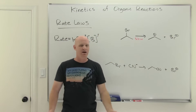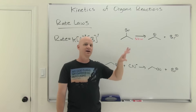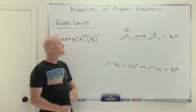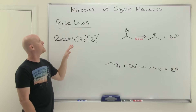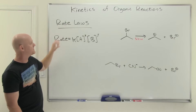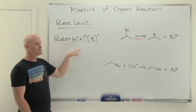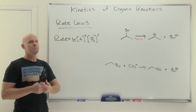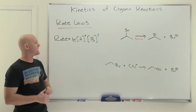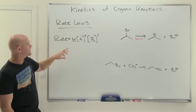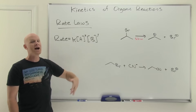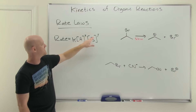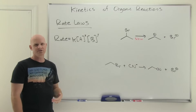They can't tell you anything about the rate of the reaction, and so that's what we'll talk about with kinetics of organic reactions. The first thing I want to remind you of are rate laws — a mathematical relationship that shows you how fast a reaction goes based on the concentration of the reactants. Here we've got A and B as reactants, and these exponents are called the orders.